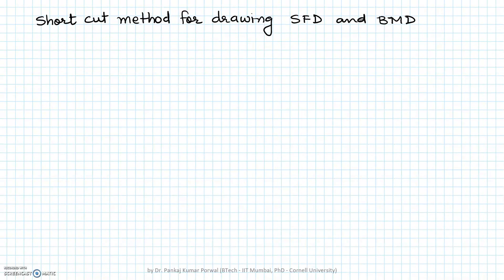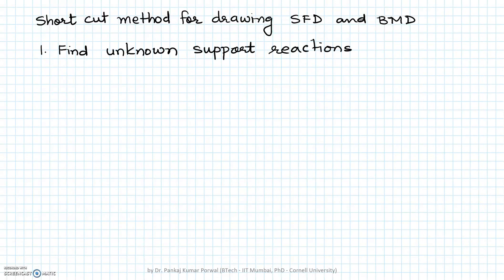In this session, we will learn about the shortcut method to draw shear force and bending moment diagrams. The first step is to find the unknown support reactions. Once we have the unknown support reactions, we draw a diagram of the beam with all the external forces and support reactions.